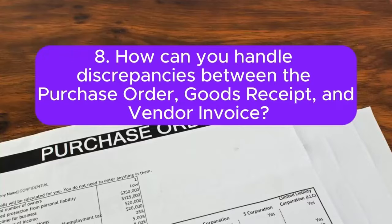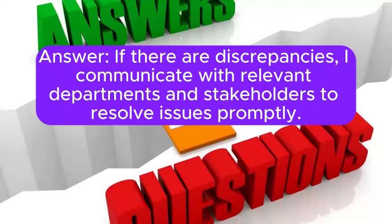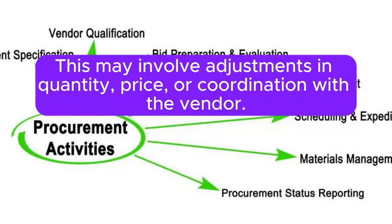Question 8: How can you handle discrepancies between the purchase order, goods receipt, and vendor invoice? Answer: If there are discrepancies, I communicate with relevant departments and stakeholders to resolve issues promptly. This may involve adjustments in quantity, price, or coordination with the vendor.